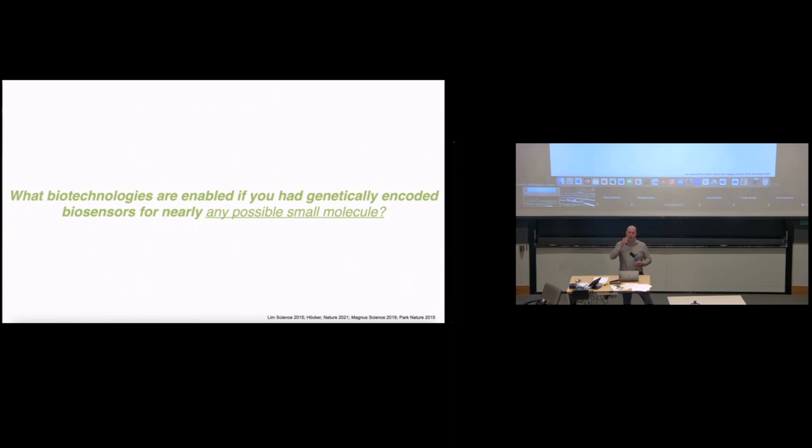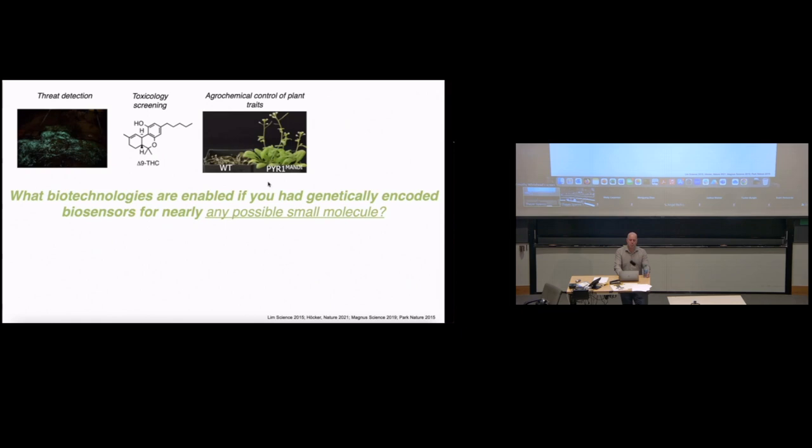I'm going to switch gears and be much more engineering for this last part. I just want you to think, one third of my lab, what we really focus on, is developing platforms for small molecule control of life. What I'd like you to think about is if you could control or had genetically encoded biosensors for nearly any possible small molecule, what could you do? Most prosaically, and what we're funded for, you can do threat detection. You can sense TNT by genetically encoded bacteria or plants. You can do toxicology screening on site. You can do agrochemical control of plant traits.